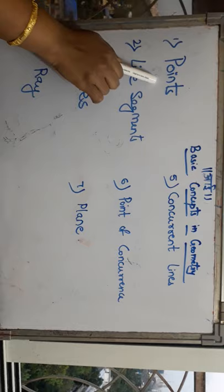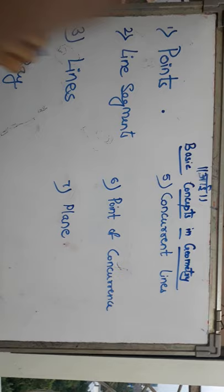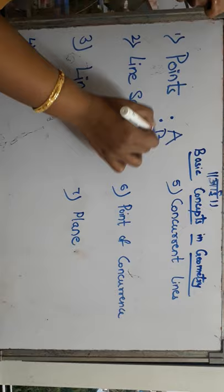These are the concepts we are going to study. The first is points. What is point? Point is a single tiny dot. This is a single tiny dot and it is always recognized with a capital alphabet, that is A, capital B, etc.